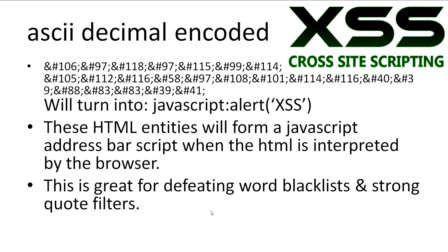Let's look at the method that will most likely work if you're not having much luck. Here we can see what looks like a bunch of gibberish, however this is just a string written with HTML entities for each character in decimal ASCII. These entities will form our familiar javascript colon alert XSS after the web browser evaluates their characters. This is great for bypassing blacklists and strong quote filters, and also great for hiding the purpose of a reflected attack.